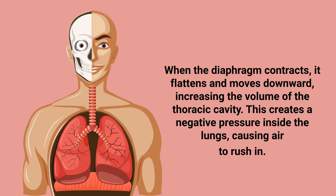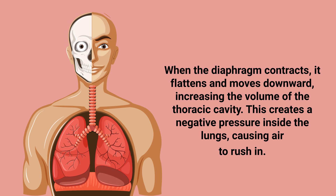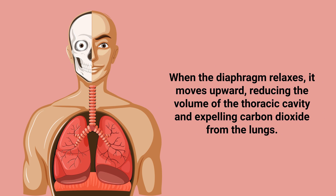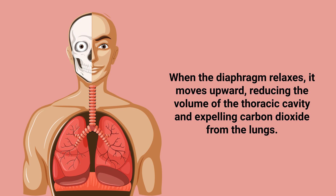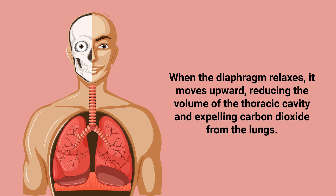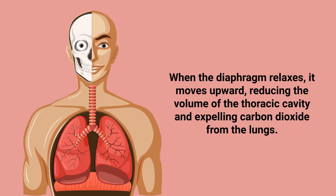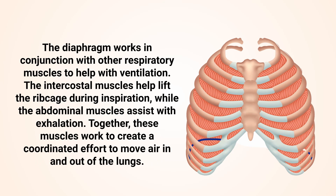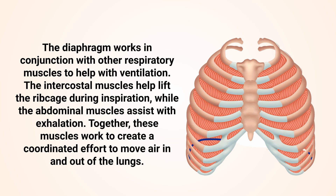When the diaphragm relaxes, it moves upward, reducing the volume of the thoracic cavity and expelling carbon dioxide from the lungs. The diaphragm works in conjunction with other respiratory muscles to help with ventilation.